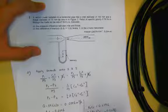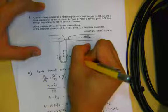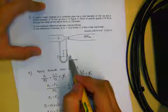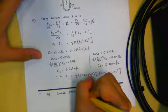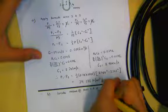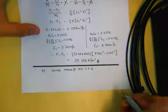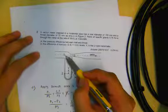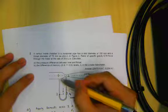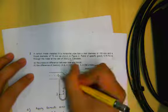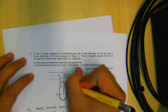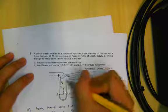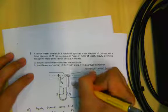Part B asks for the difference of mercury levels in the U-tube manometer. Labeling the bottom of the manometer as points 3 and 4, pressure at the same height of the same fluid must be equal. Pressure at point 3 equals P1 plus the petrol column height labeled P_F. On the right, pressure at 4 equals P2 plus P_F plus the mercury column rho_mercury times G times X.